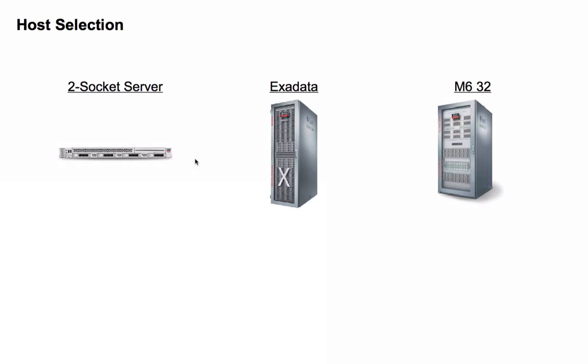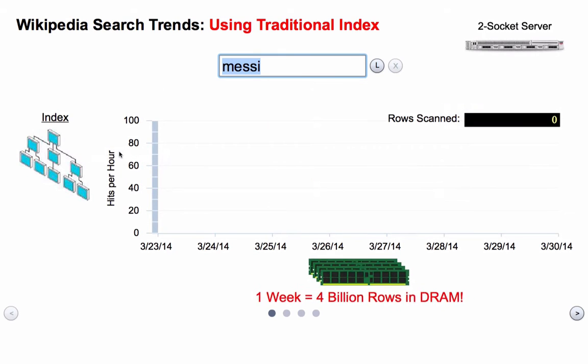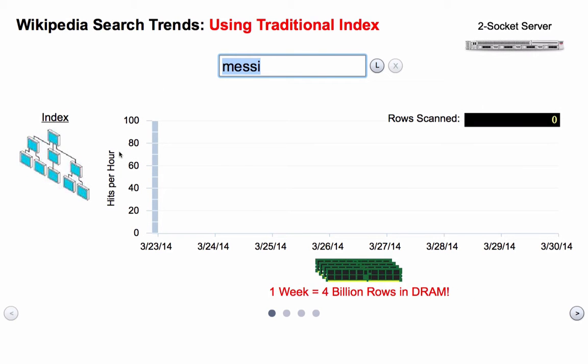Let's start first with the two-socket server and see the basics of how this technology works. We wanted a demonstration that used real data, uses a lot of data, and shows analytics on that data. We found we could get real live Wikipedia search data, which basically shows what searches people did every day of the week for the last few years. We built a simple application on top of this that takes that Wikipedia search data and performs SQL analytics operations on it.